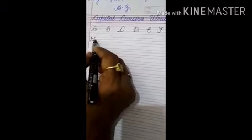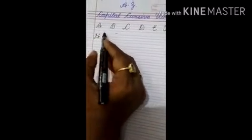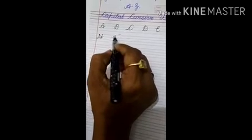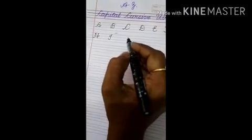For I, touch the second line, go on the top line, come on the third line. This is called capital I.